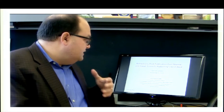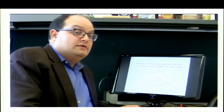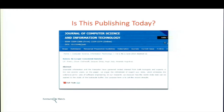Consider this a tour of scientific publishing's Wild West. The first slide shows a paper from the Journal of Computer Science and Information Technology — it looks like a legitimate journal, has an ISSN number, the paper has a DOI, all the trappings of a real paper.